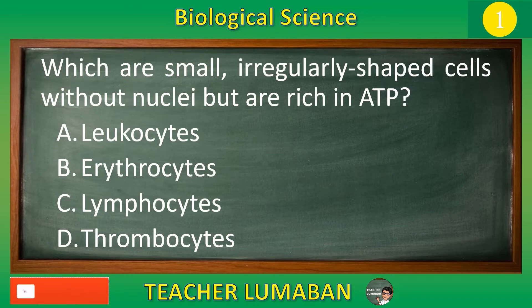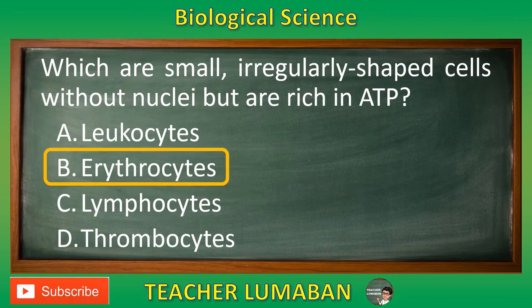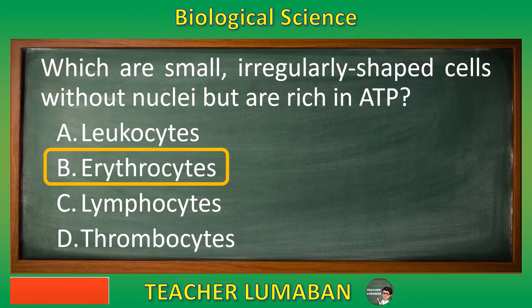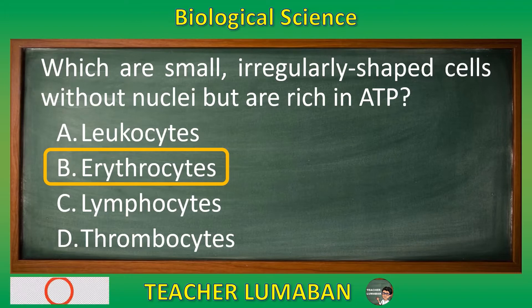The correct answer is Letter B: Erythrocytes. Erythrocytes are small, irregularly shaped cells without nuclei but are rich in ATP.